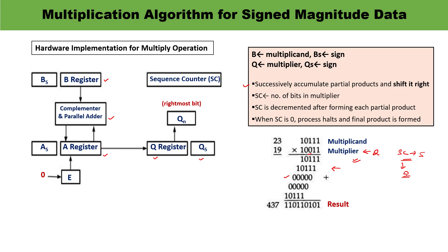Initially, the multiplicand is in register B and the multiplier is in register Q. There is a parallel adder which adds the contents of registers B and A. The sum of registers A and B forms the partial product, and this product is stored in register EA. EA result — whatever product you are finding — is stored in register EA. E is a flip-flop that stores one bit of information. Then both the partial product and the multiplier are shifted to the right: the partial product is in EA and the multiplier is in Q, so both are shifted one bit to the right.